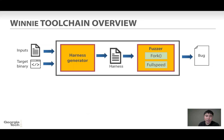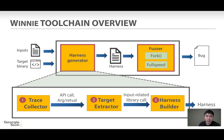From the user input and target binary, Winnie will try to generate the harness using the harness generator. After we generate the harness, we deliver it to the fuzzer. In the fuzzer, we test the program using fork and full-speed fuzzing features. In the harness generator, we first collect the run trace of the program to collect API calls and the argument and return values of each API call. Then we try to identify interesting fuzzing candidates, and finally we build the harness.